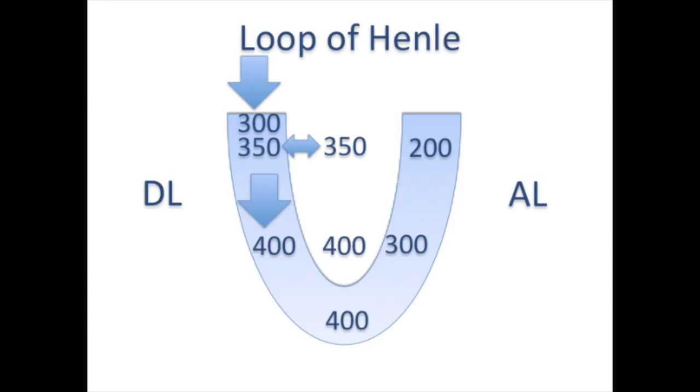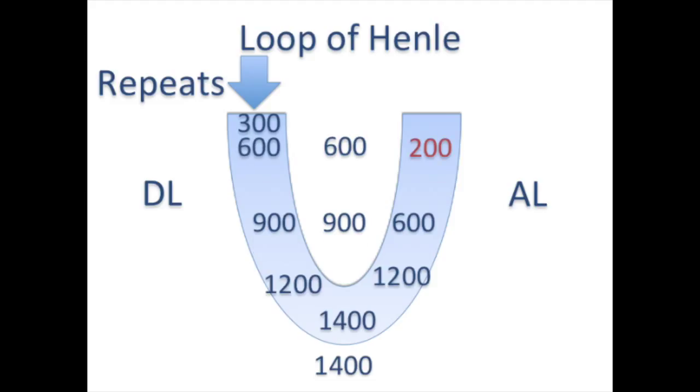The same process is repeated again so that the fluid which leaves the ascending limb is always having osmolality less than that of plasma. That is, a dilute urine is formed in the kidney. This process repeats again and again in the interstitium and the tubules so that the interstitial osmolality is multiplied at each level. This process is called counter current multiplier.